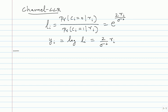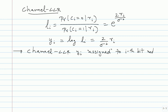The channel LLR y_i is assigned to the i-th bit node. That is my input to the decoder. The decoder will have to process this input and try to produce c-hat, doing bitwise detection — for each bit we try to produce c_i-hat. That is the notion of the bitwise MAP decoder.